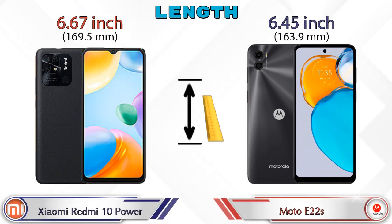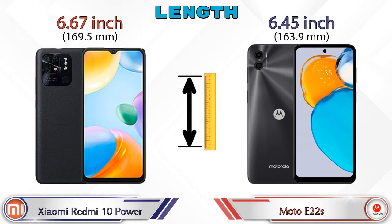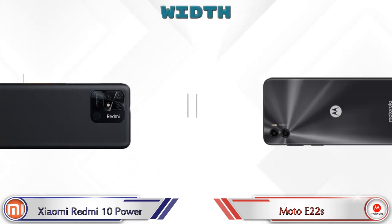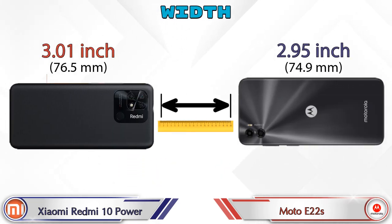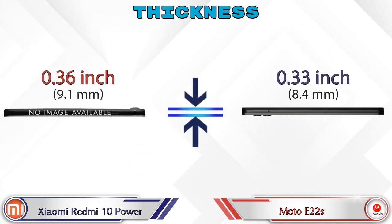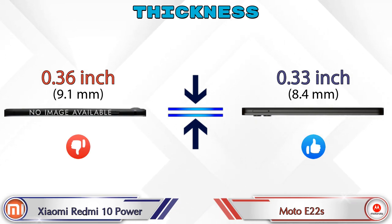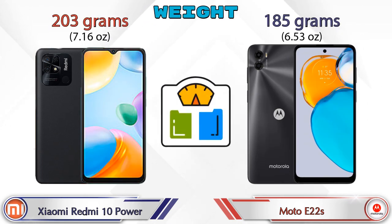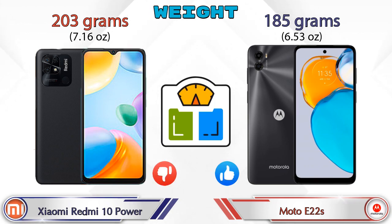Talking about dimensions: Redmi 10 Power length is 6.67 inches and Moto E22s is 6.45 inches, which is less. Width: Redmi 10 Power is 3.01 inches and Moto E22s is 2.95 inches, which is less. Thickness: Redmi 10 Power is 0.36 inches and Moto E22s is 0.33 inches. Weight: Redmi 10 Power is 203 grams and Moto E22s is 185 grams.